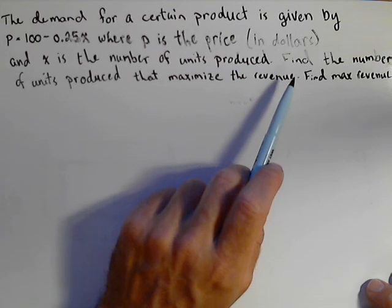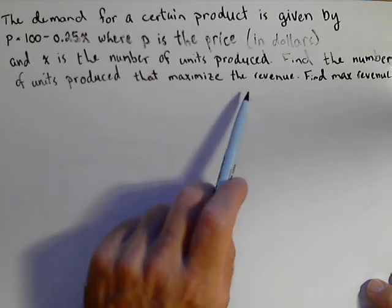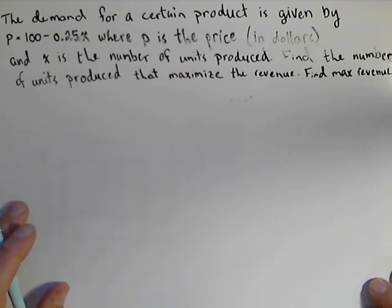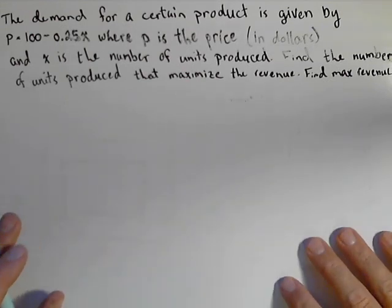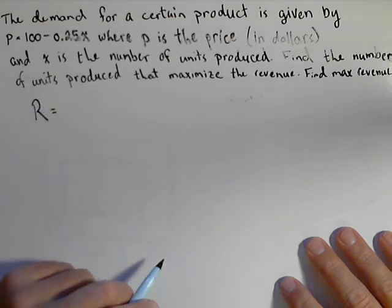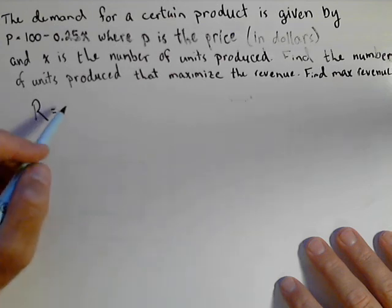What we want to do is find the number of units produced that maximize the revenue and find the maximum revenue. Well, we have an intermediate step, and that intermediate step is to find the revenue. Revenue is all the money a company brings in, so it's the number of units they sell times the price they charge.